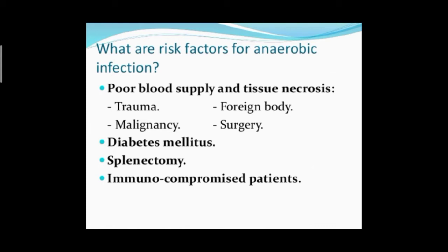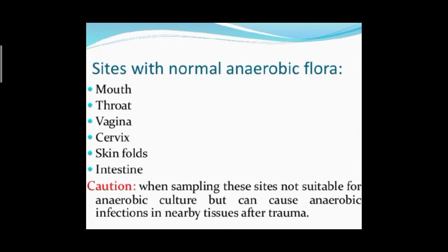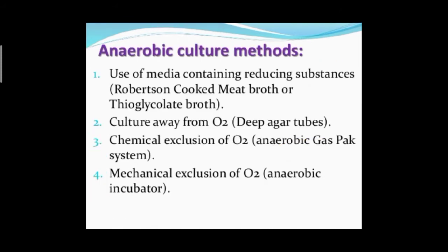Risk factors for anaerobic infections include tissue necrosis, diabetes mellitus, and splenectomy — the surgical removal of the spleen. If any anaerobic bacteria enter the body in these conditions, they can cause complications. A weakened immune system also increases susceptibility to anaerobic infections. Common entry sites include the mouth, throat, and skin.